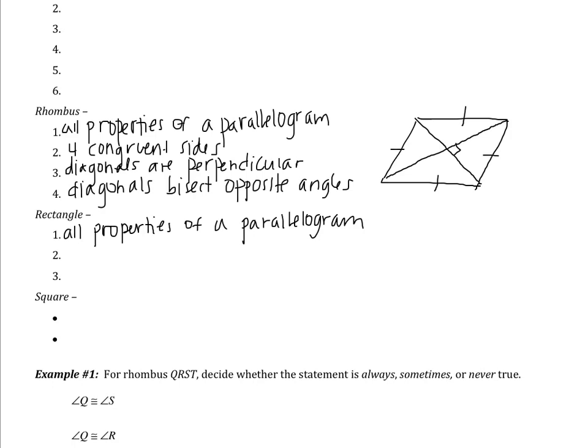The last property of a rhombus is that the diagonals bisect the opposite angles. So, for example, this angle is bisected, this angle is bisected, this angle is bisected, and this angle is bisected. Those three properties make this quadrilateral more specific than a parallelogram — it's a parallelogram, but with additional properties which make it a rhombus.